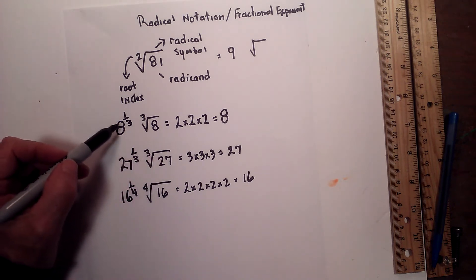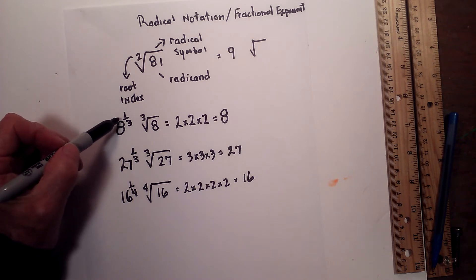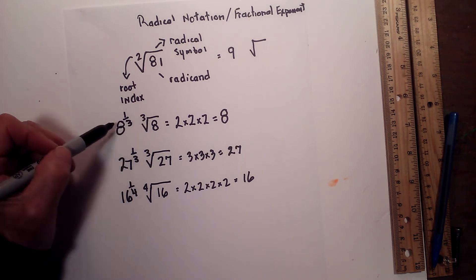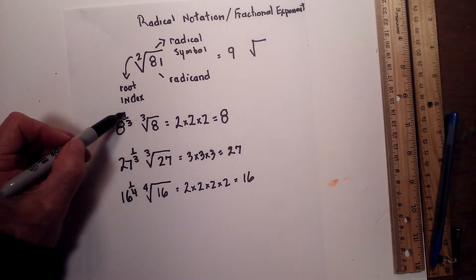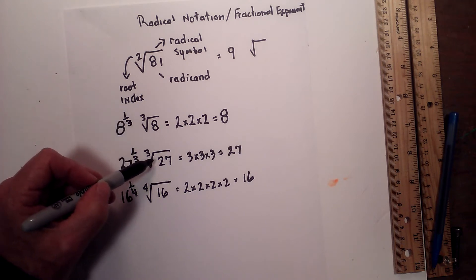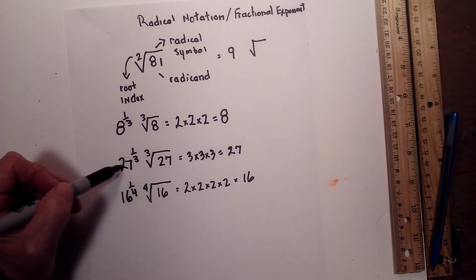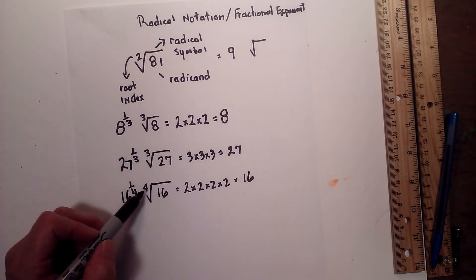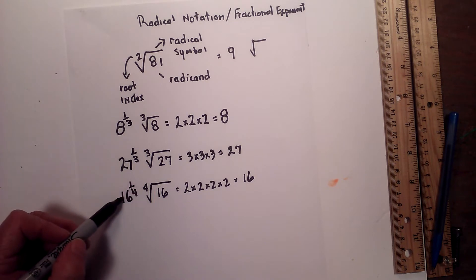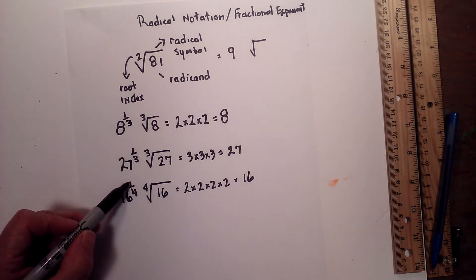However, another way to notate this is using a fractional exponent. This can be rewritten as 8 with the exponent 1/3. 27 can be written with the exponent 1/3. And 16 to the 4th root can be rewritten as 16 with the exponent 1/4.